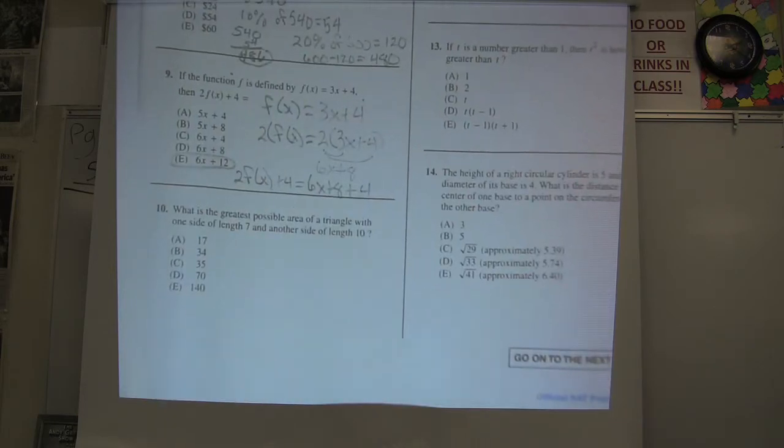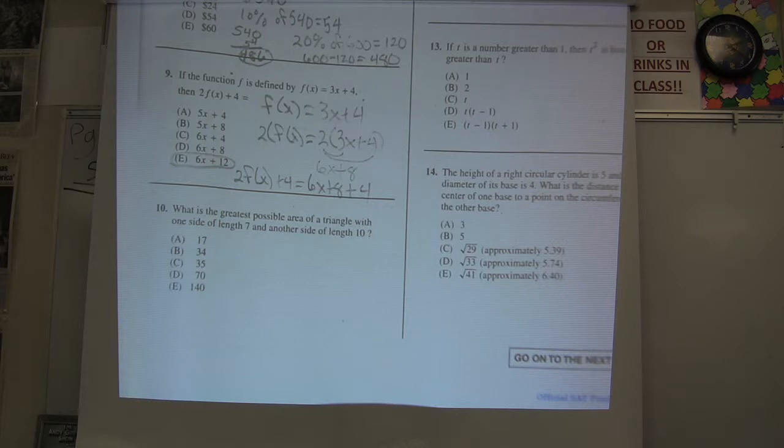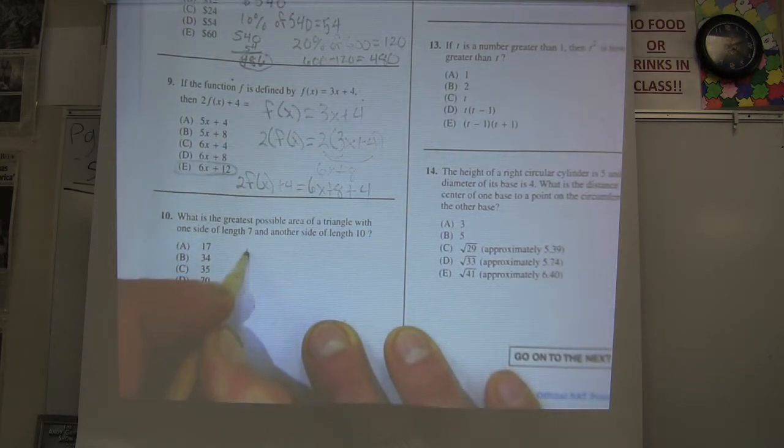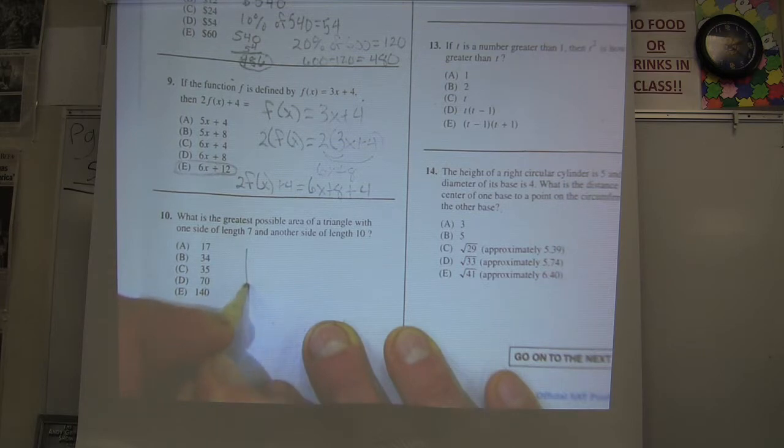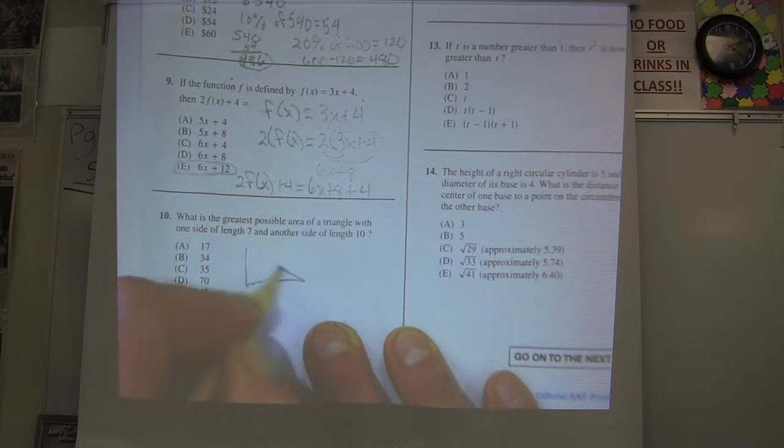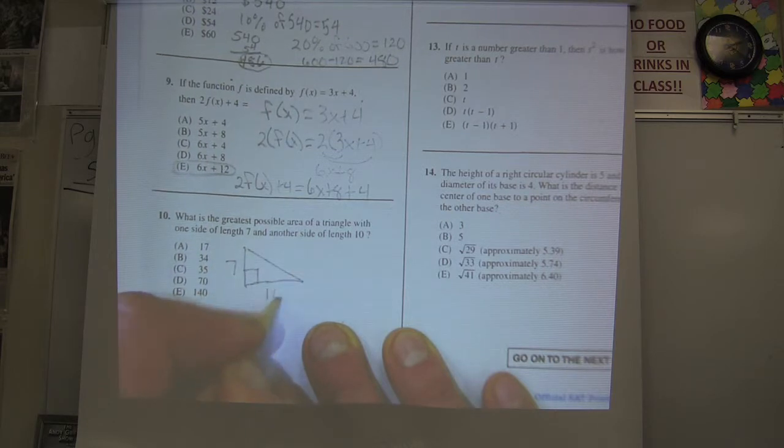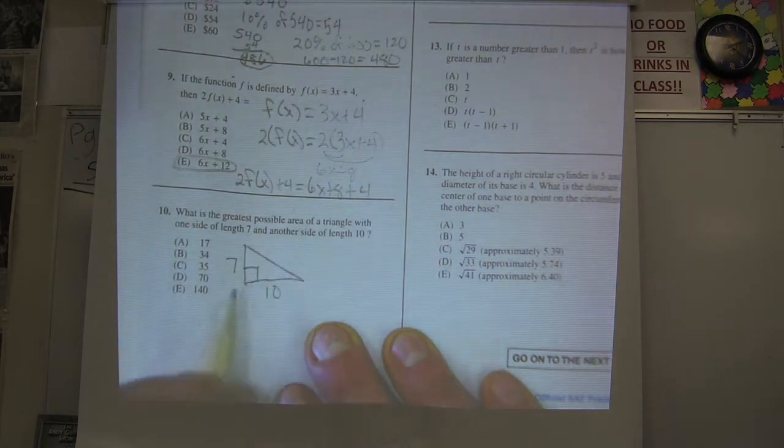One more, number 10. What's the greatest possible area of a triangle with one side of length 7 and another side of length 10? This one's kind of hard to explain. I'm going to go right to a right triangle, and I'm going to show you why this right triangle is going to be the biggest, no matter what. And the legs are going to be 7 and 10.